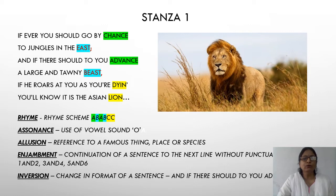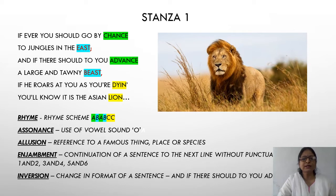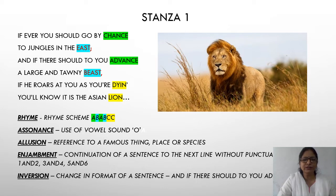First, the rhyme scheme. Here we see 'chance' and 'advance' are given the color code green and the letter A. 'East' and 'beast' rhyme, given the color code blue and the letter B. And 'dine' and 'lion' are rhyming, given the letter C. So the rhyme scheme is A-B-A-B-C-C. You have to write it in small letters. The same rhyme scheme is used throughout the poem for all the stanzas.